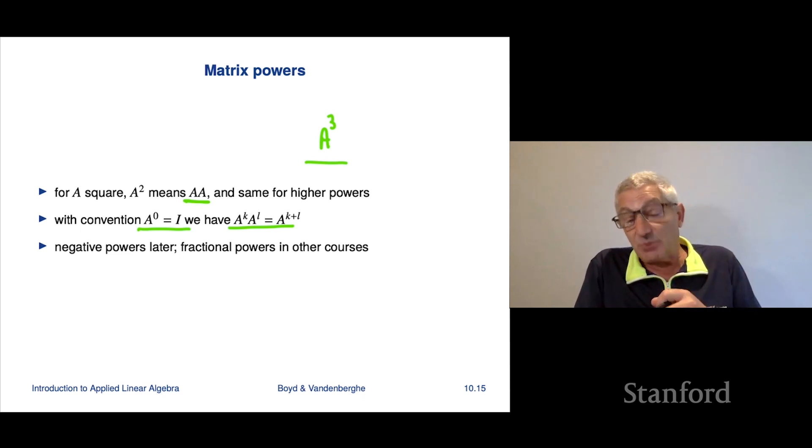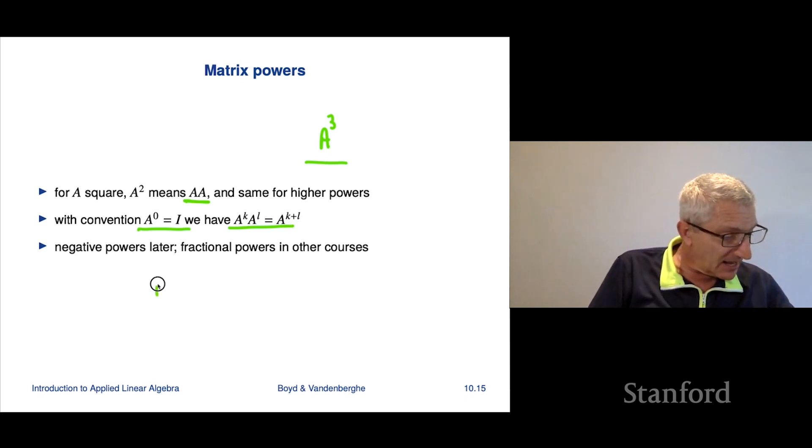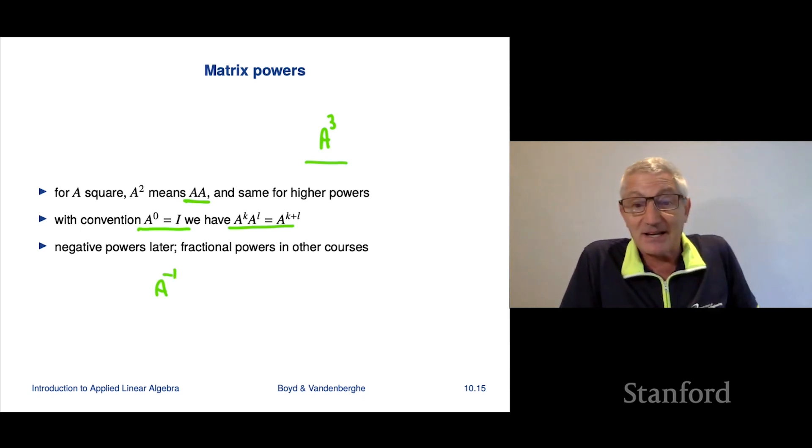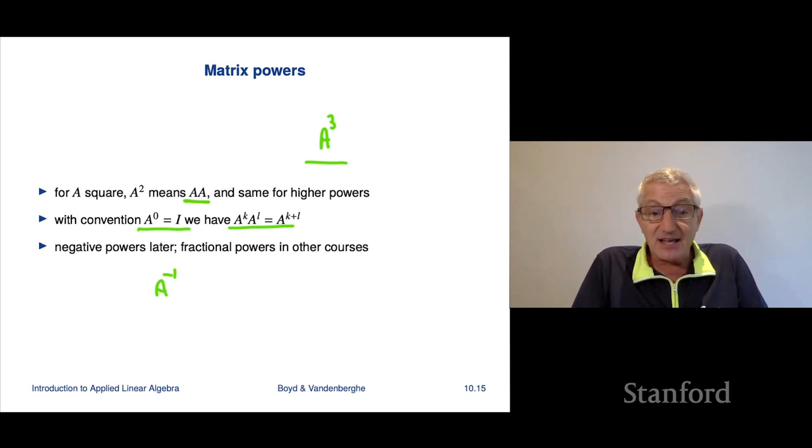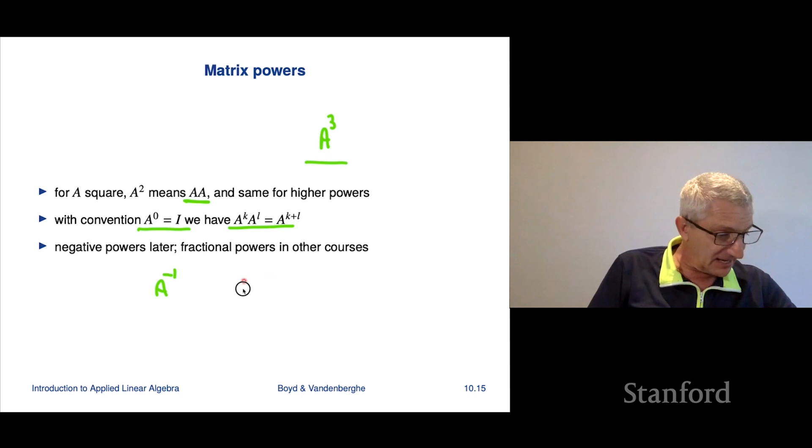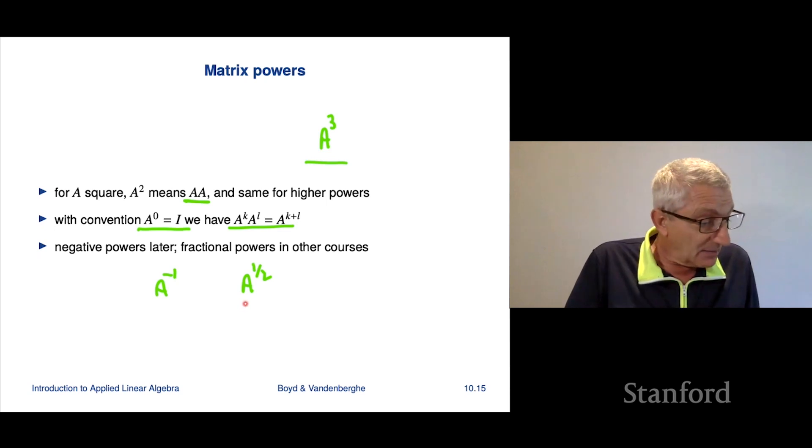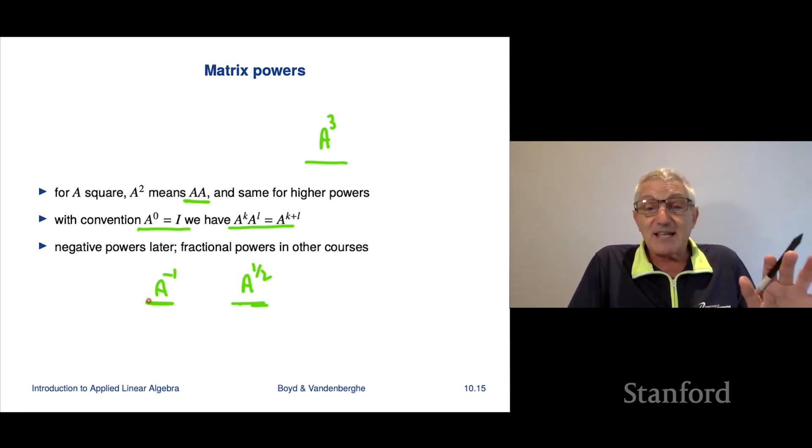Now, later in this book and course, we're going to see negative powers. For example, we're going to see A inverse, which is going to be the inverse of the matrix. That's actually one of our next topics. In more advanced courses, you will see weird things like the square root of a matrix, right? Like A to the 1 half, and you'll see all sorts of other crazy stuff like that. We're not going to be talking about fractional powers in this course, although they do come up in some applications. But we will be talking about inverses. That's later. For now, we're just talking about positive powers or the 0th power, which by convention is the identity of a matrix.